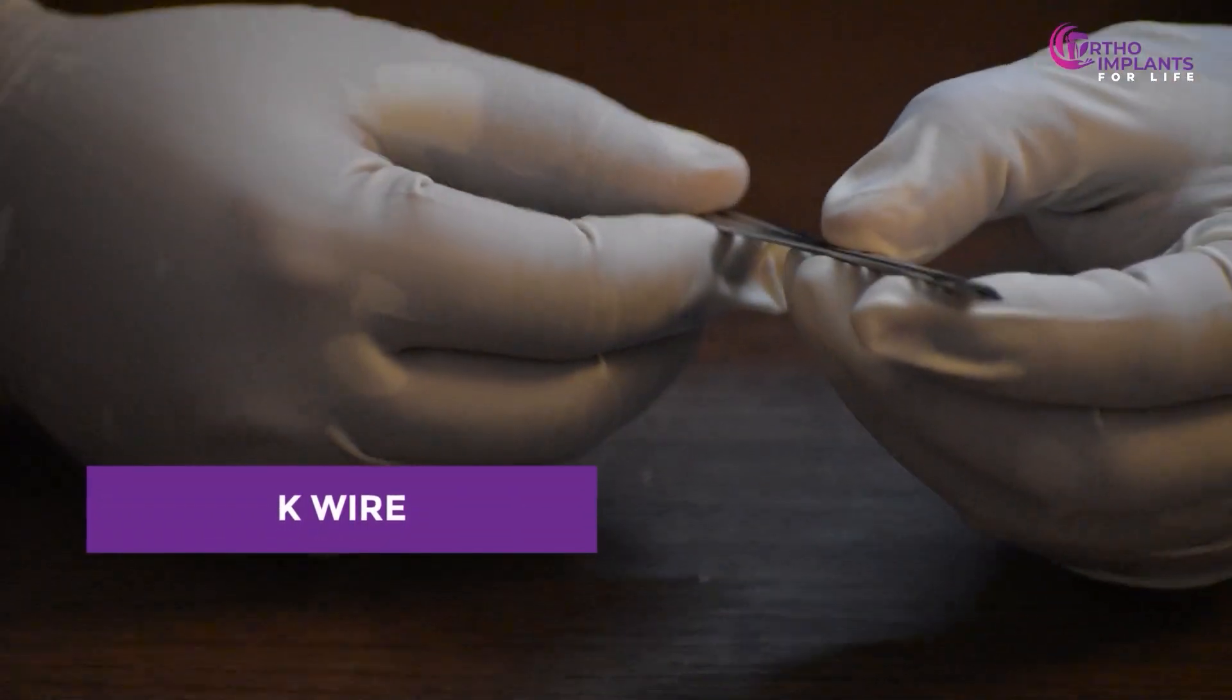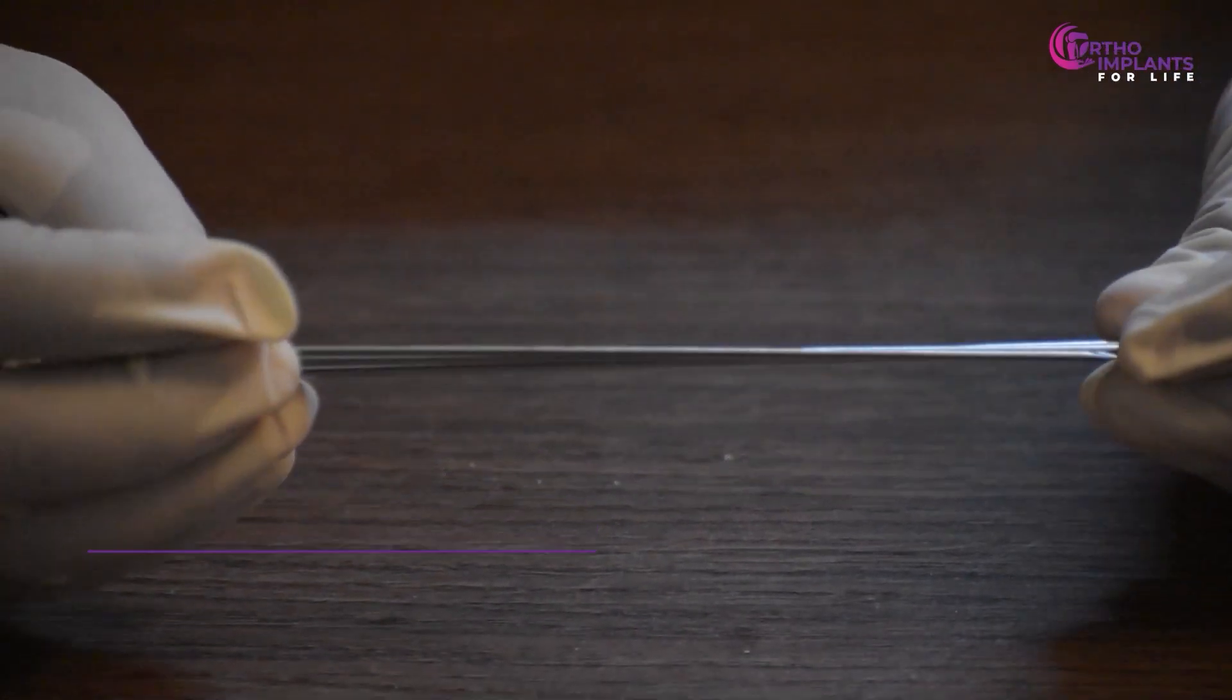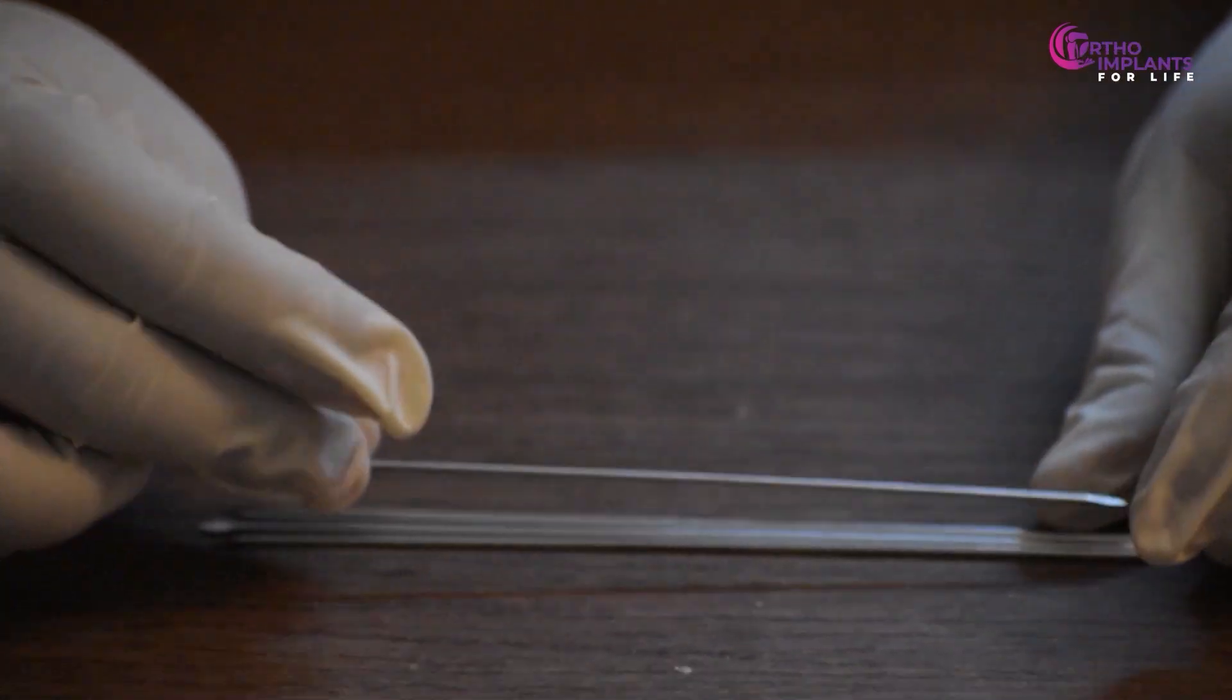Next, we have the K wire, which is 1.5 to 2.5 mm in size, used for holding the plate in place.